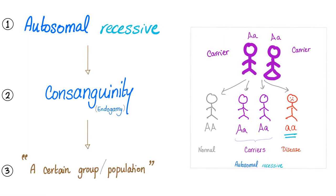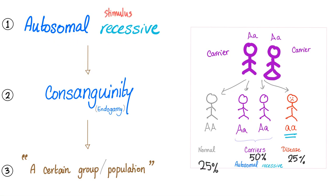In autosomal recessive disease, two carriers marry. Their offspring have a 25% chance of being normal (AA), 50% chance of being carriers (Aa), and 25% chance of having the disease (aa). Whenever you hear autosomal recessive, think consanguinity — and then think of a specific group or population, because consanguinity clusters within groups.